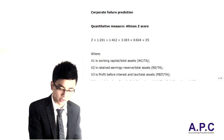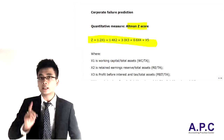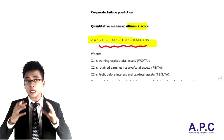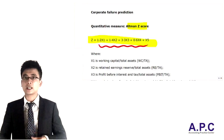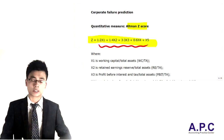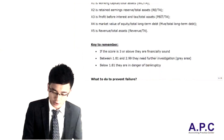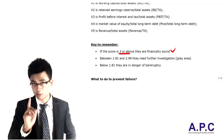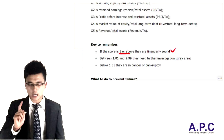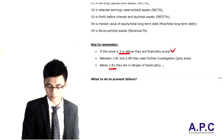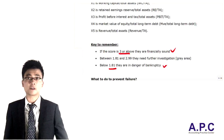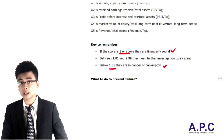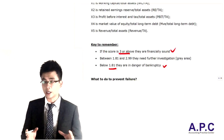Altman came up with a model called the Z-score. It's a formula: after you've calculated all the variables using figures from the statement of financial position and income statement, you plot them together to give you the Z-score. Altman said if the Z-score is more than 3, the company is good — no problem whatsoever. If the Z-score is lower than 1.81, the company would go bankrupt very easily.